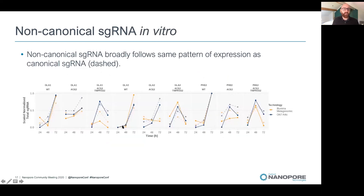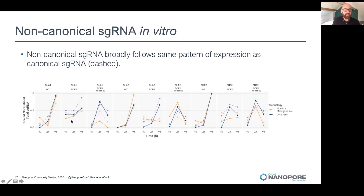We also investigated in vitro whether non-canonical subgenomic RNA followed the same kinetic pattern as canonical subgenomic RNA. The dashed line represents canonical and the solid line non-canonical subgenomic RNA. Over time, the two types broadly agree with each other in their kinetic behavior.